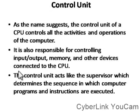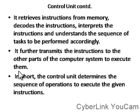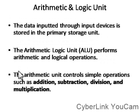The CPU is divided into three parts. The first part is the control unit. As the name suggests, the control unit controls all the activities and operations of the computer. It is responsible for controlling input, output, memory, and other devices connected to the CPU — we can say it is responsible for controlling hardware. It acts like a supervisor. It determines the sequence in which computer programs and instructions are executed. It retrieves instructions from memory, decodes them, interprets the instruction, and understands the sequence of tasks to be performed, then transmits the instructions to other parts of the computer system to execute them.